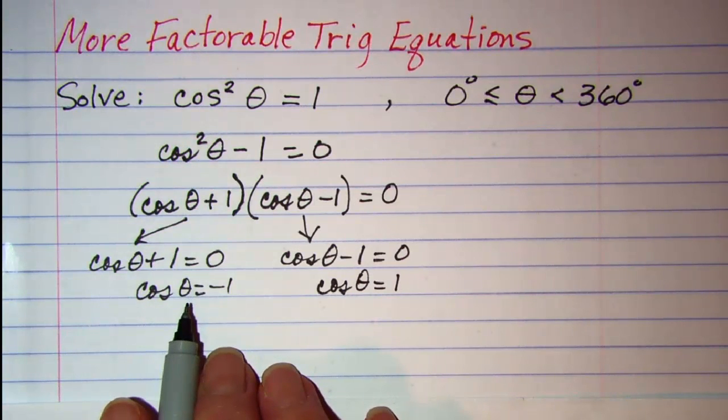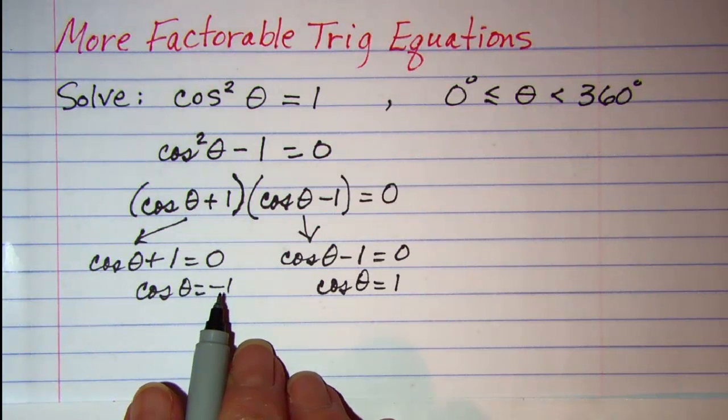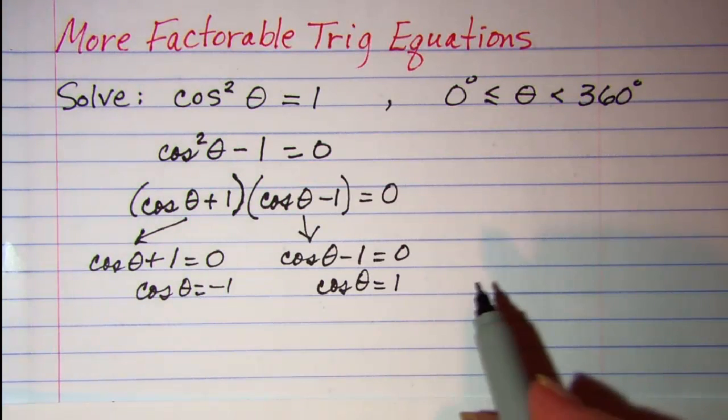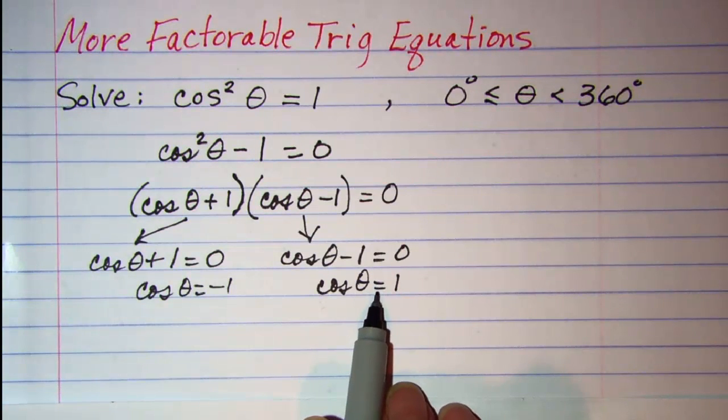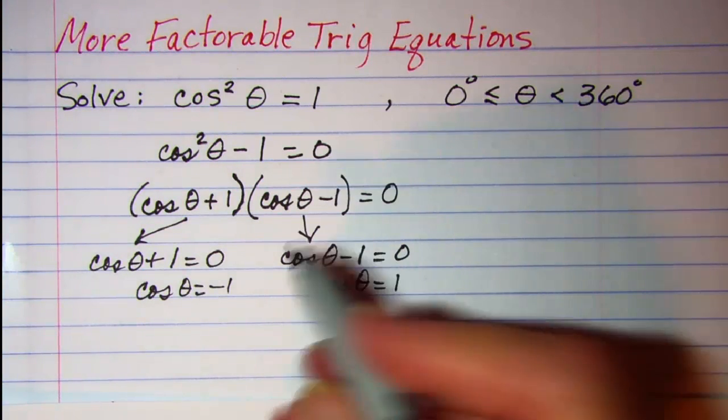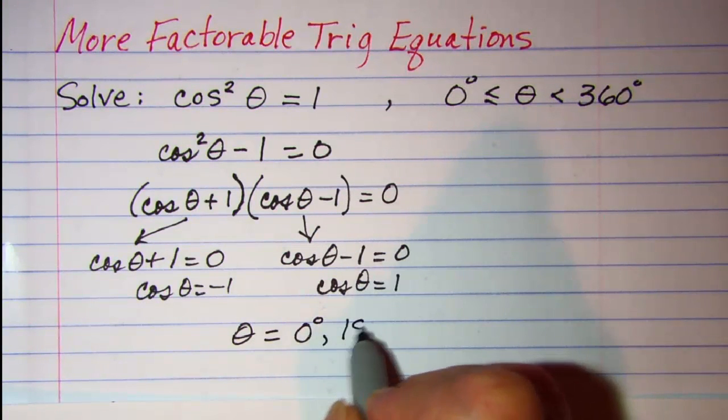Now we know cosine is x over r and so x is negative 1 when theta is 180 degrees and x is positive 1 when theta is 0. So our solution then theta equals 0 and 180.